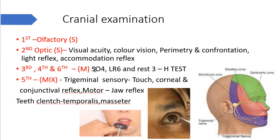Cranial nerves III, IV, and VI are examined together as motor nerves. Remember: SO4 — superior oblique is supplied by the fourth nerve; lateral rectus by the sixth nerve; and the rest of the muscles by the third nerve. To examine them, make an H shape in front of the subject with your finger and ask them to follow your finger with their eyes. This H test allows you to test all movements and muscles of the eye.